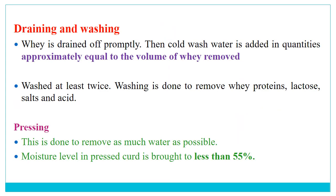The next step is draining and washing. After coagulation, the whey is drained promptly. This whey is then washed with water in equal quantity to the whey removed — at least twice. Washing is done to remove whey proteins, lactose, salts, and acid from the coagulum. At least two washings are done with the same volume of water.